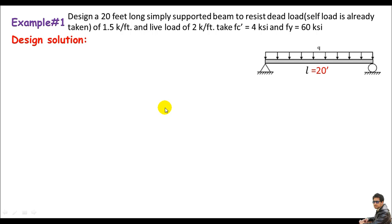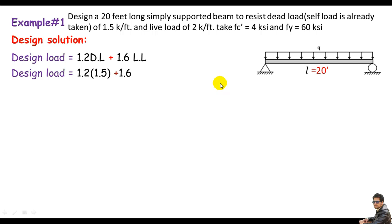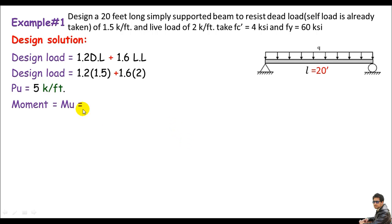Step one: determination of design load. We have two load types — dead and live. Using the ACI load combination: Wu = 1.2 × dead load + 1.6 × live load = 1.2 × 1.5 + 1.6 × 2.0 = 1.8 + 3.2 = 5 kips per foot. So the design load Wu equals 5 k/ft.